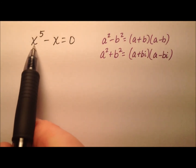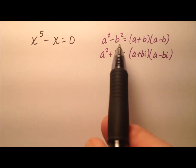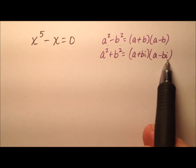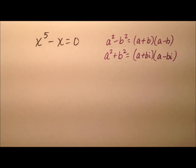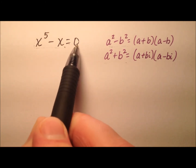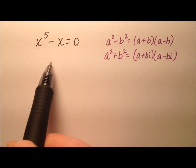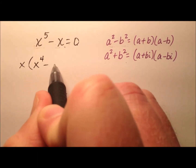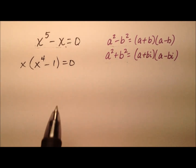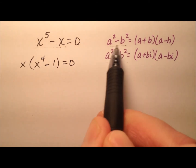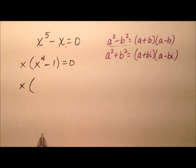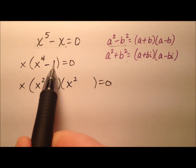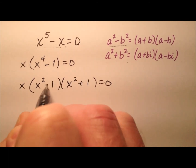In this third and final example we're going to solve the equation x to the fifth minus x equals zero. In this case we're actually going to use difference of squares and sum of squares — the sum of squares will be hidden inside. Before we get going, we have our expression equal to zero, which is where it has to be to use factoring. It looks like I have a greatest common factor of x that I can pull out, giving me x times (x to the fourth minus one) equals zero. x to the fourth minus one can be factored as a difference of two perfect squares.